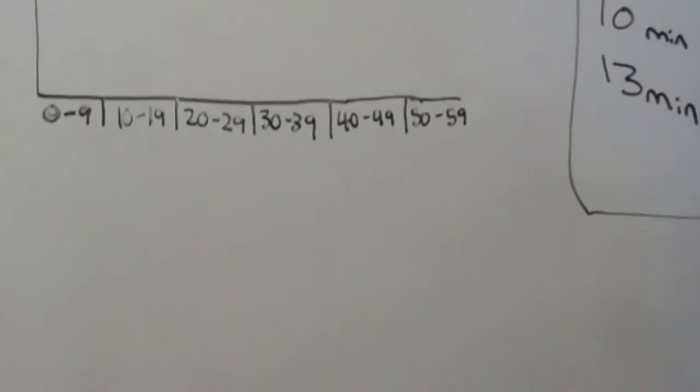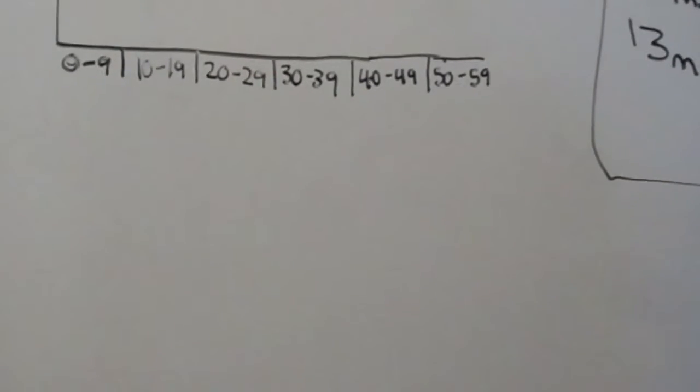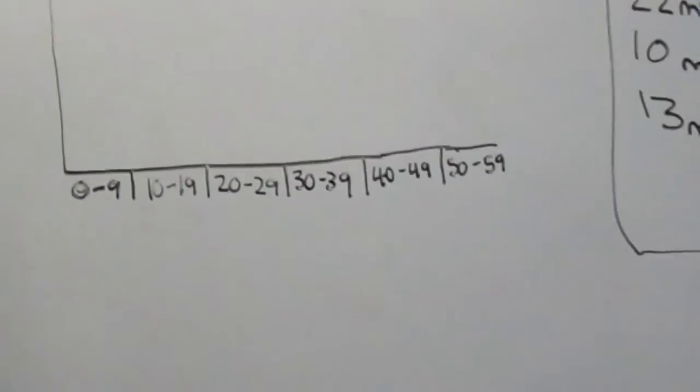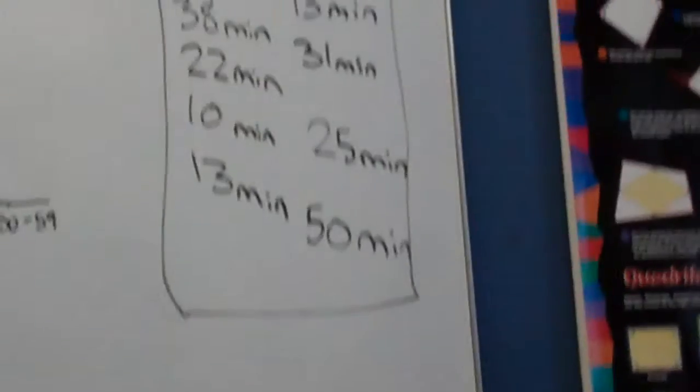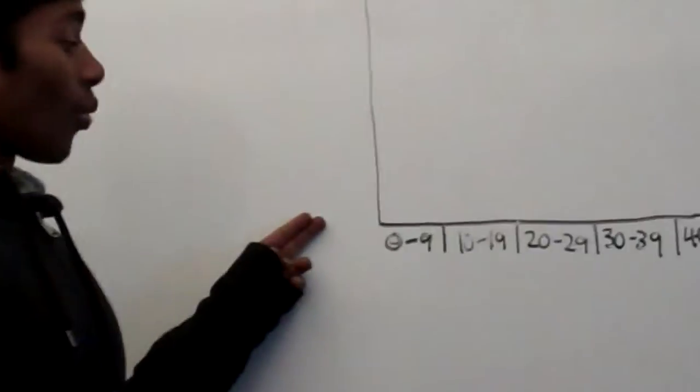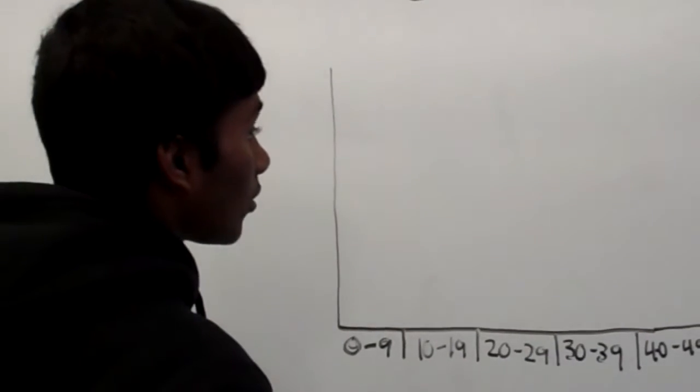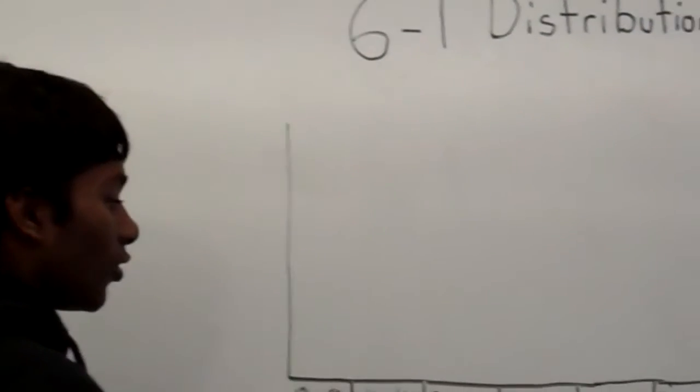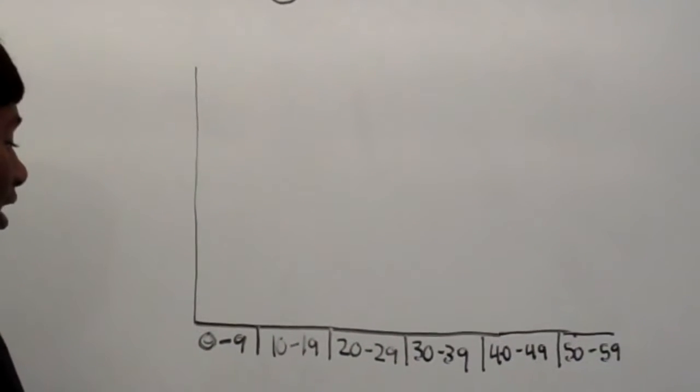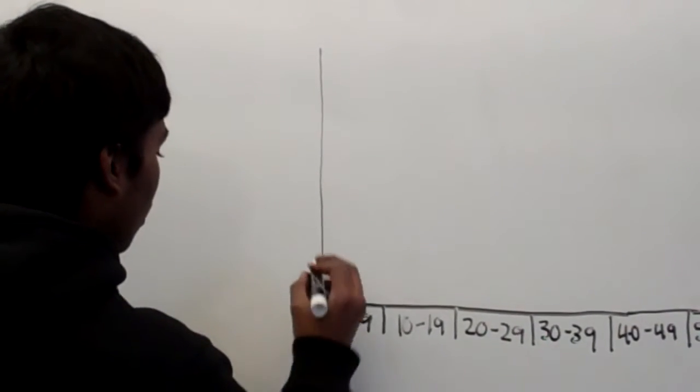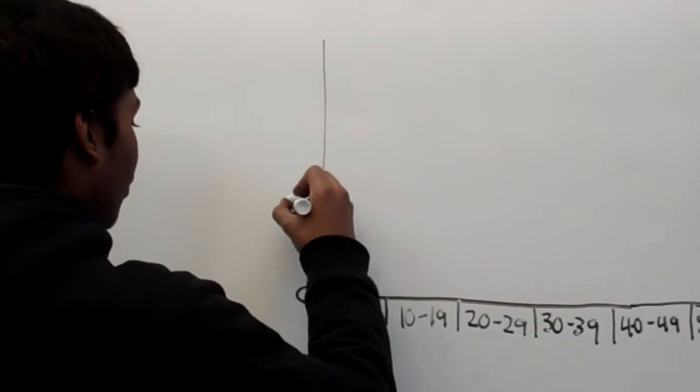So we're going to label the y-axis. Label the y-axis too. As Lucas has pointed out to me, I have to label the y-axis, which is right. So the y-axis is going to be how many people fit into each category. Since there's ten data points, I'm assuming that no category is going to have more than five or six. So I'm going to have it go up to five.